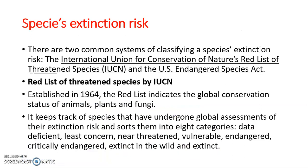The ranking or risk assessment of species extinction or endangerment is done by two organizations. One is the International Union for Conservation of Nature, which has made a Red List of Threatened Species. This list was established in 1964 and indicates the global conservation status of animals, plants, fungi, and other species. The Red List keeps track of species that have undergone global assessment for their risk of extinction, and this list is updated periodically.